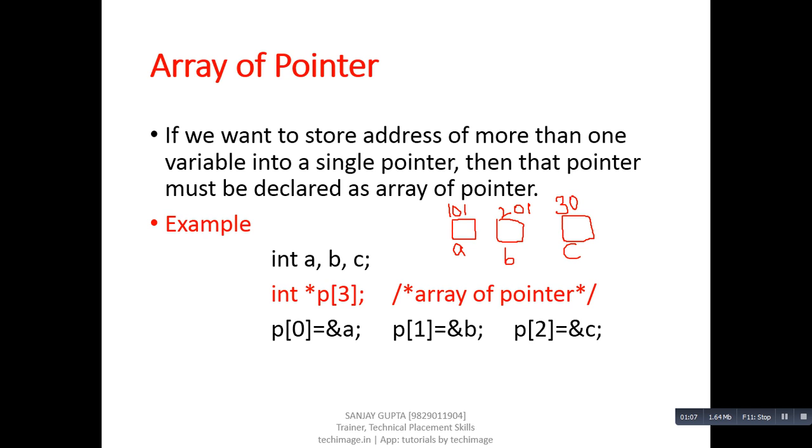Then we have declared a pointer which is known as array of pointer. Its name is P and its size is 3. It means P can store address of three variables inside it. So first statement is p[0] equals to address of a. Second statement is p[1] equals to address of B and third statement is p[2] equals to address of C.